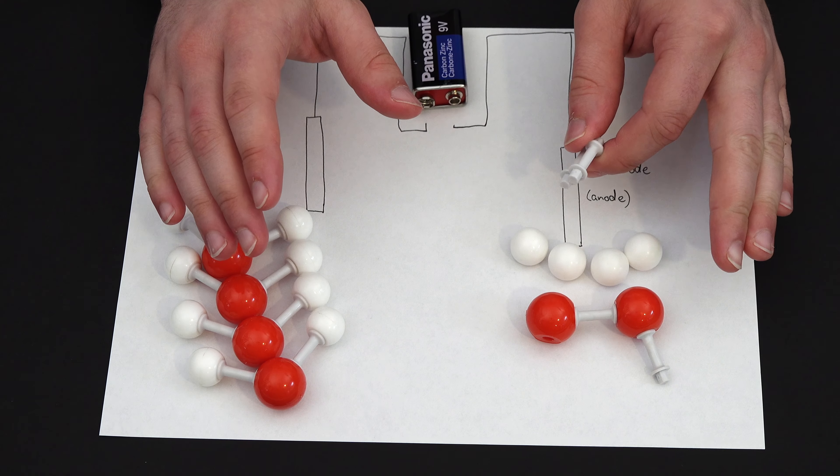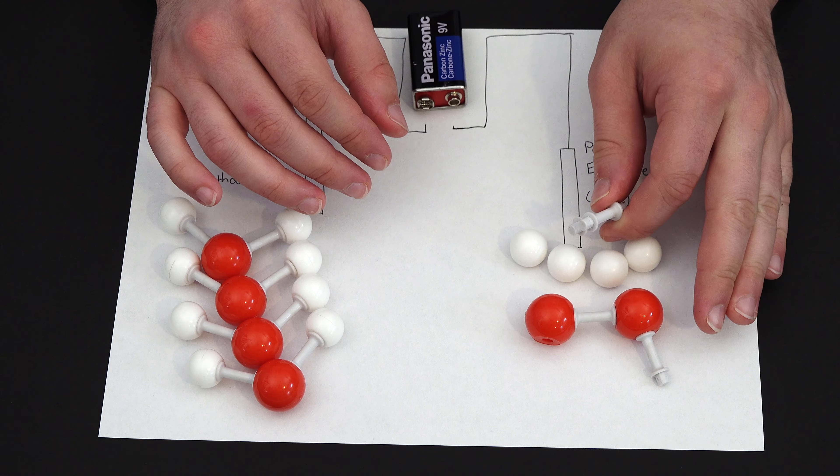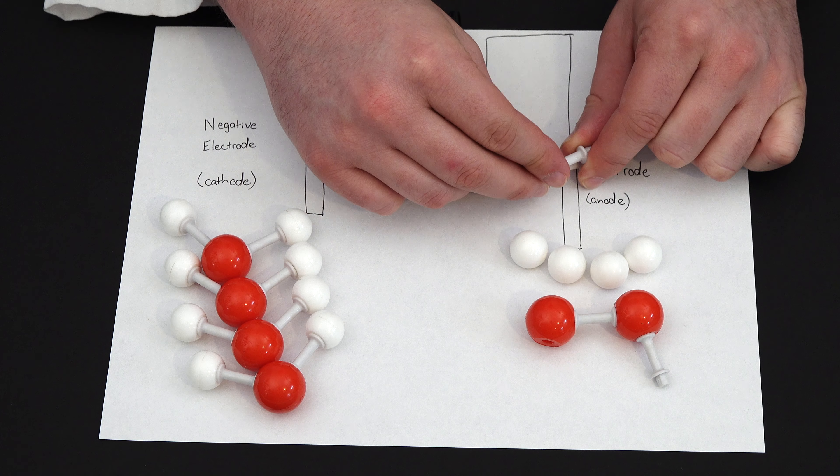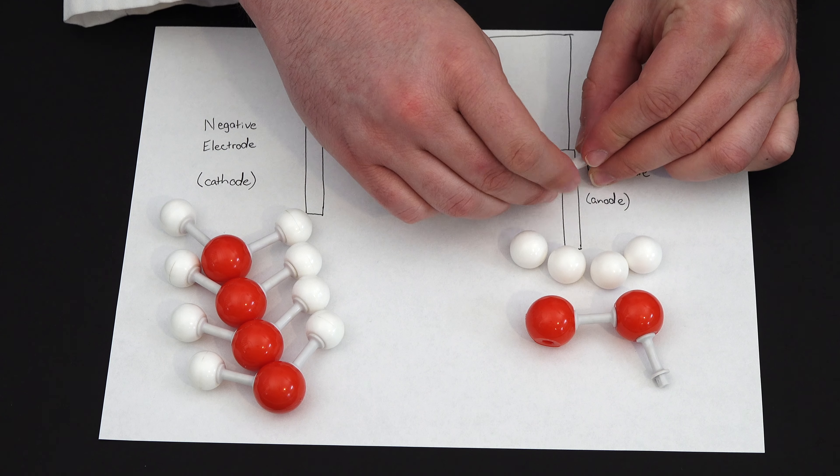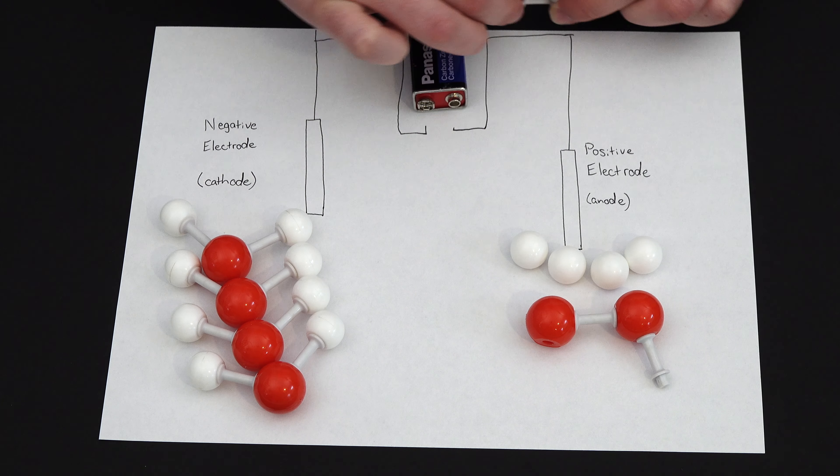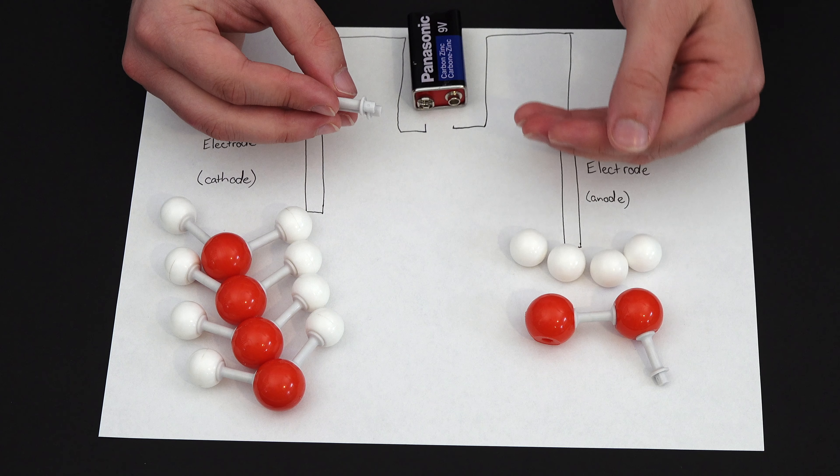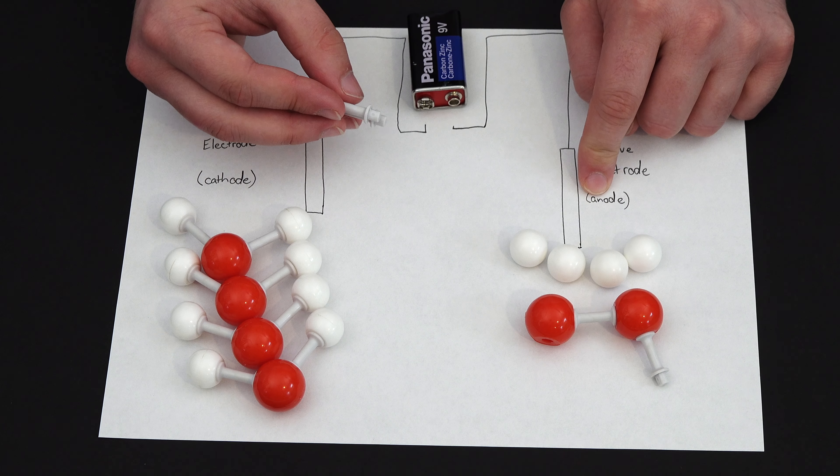Now, quick note on how this works, is the four electrons from the water don't make it to the battery. They make it a little ways up the wire, and then they knock out four electrons in the wire, further up the wire, and so on and so on and so on until it reaches the battery.